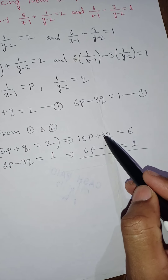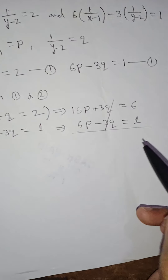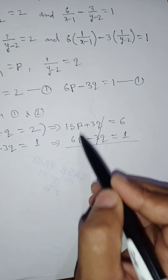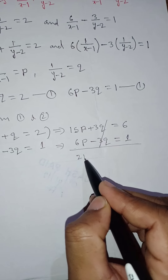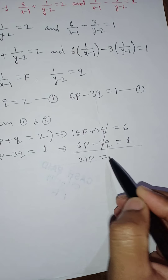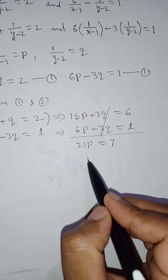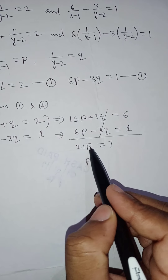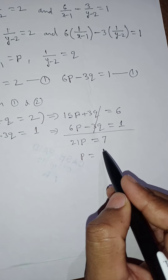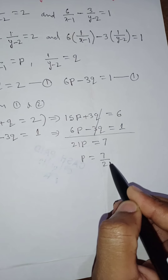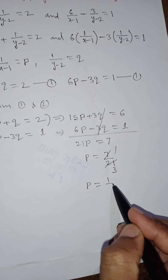Since we have plus 3q and minus 3q, they cancel. Adding: 15p plus 6p gives 21p, and 6 plus 1 gives 7. So 21p equal to 7, which means p equal to 7 by 21, and simplifying, p equal to 1 by 3.